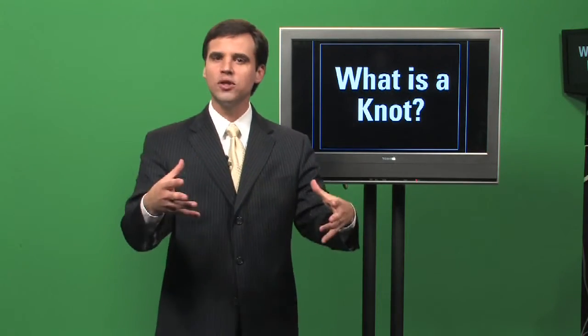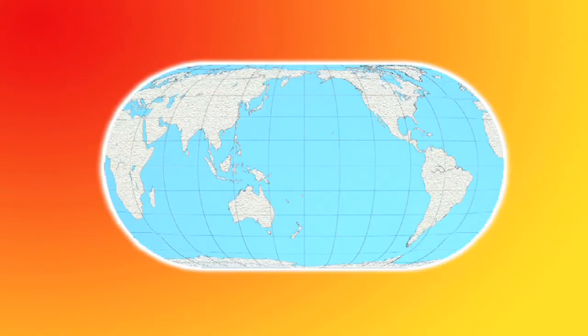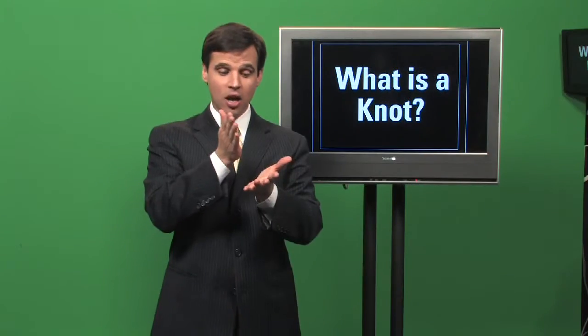A nautical mile is based on the circumference of the earth. You take the earth — let's say the circle of the equator — and divide that into 360 degrees, or 360 equal parts. Then between each degree you divide that up into minutes, 60 of them.